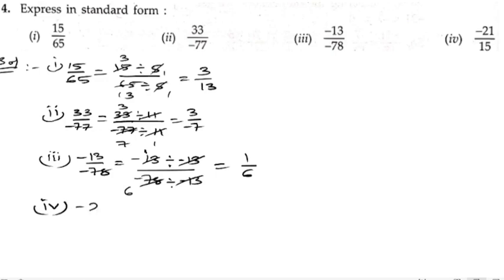Minus 21 by 15. So here the highest common factor is 3. So let us divide it with 3.